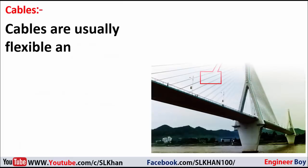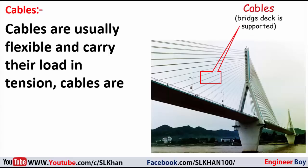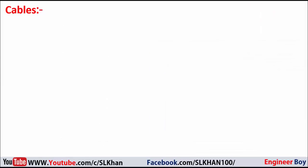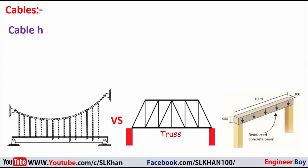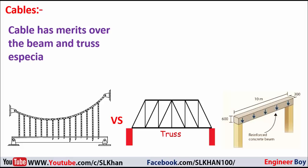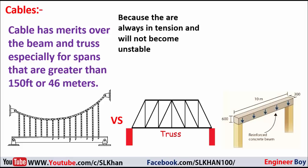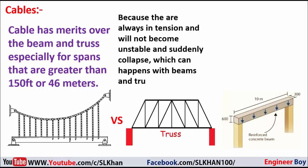Cables are usually flexible and carry their loads in tension. Cables are commonly used to support buildings, roofs, and bridges. Cables have merits over beams and trusses especially for spans greater than 150 feet or 46 meters, because they are always in tension and will not become unstable and suddenly collapse, which can happen with beams and trusses.